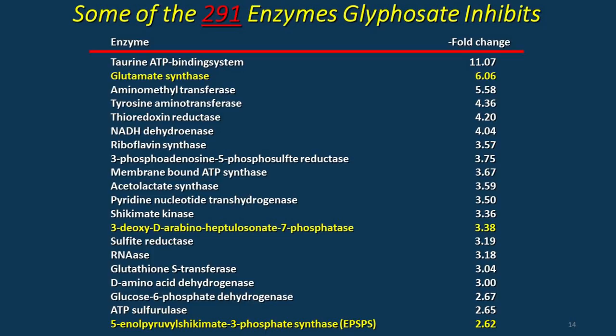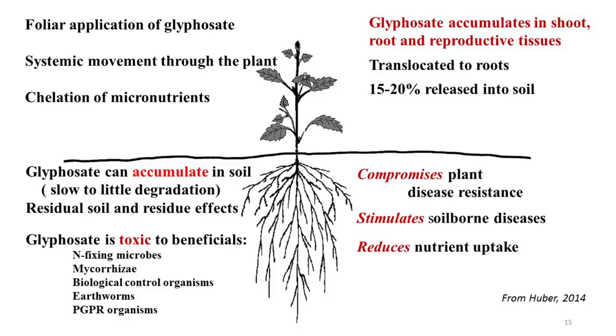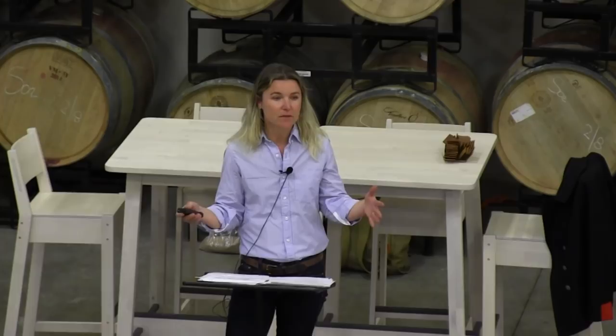Glyphosate is labeled for use as a foliar application in agricultural settings — used as an herbicide, a growth regulator, and also as a ripening desiccant. In a lot of annual row crop production, if your field is not homogenous in terms of its trajectory of ripening and you've got a harvest date before the rains come, you will go out and spray glyphosate to desiccate the field and 'ripen' it so that it can be harvested at the same moisture content.